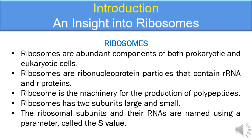Introduction and insight into ribosomes. Soon after transcription, as per the rules of central dogma, the mRNA comes to the cytoplasm from the nucleus for translation of polypeptides. The name which pops up here is ribosomes, as ribosomes are the main machinery for carrying out the entire protein translation process. Ribosomes are abundant components of both prokaryotic and eukaryotic cells. Ribosomes are also known as ribonucleoproteins, as they consist of a protein part and an RNA part. The protein part is known as ribosomal protein and the RNA part is known as rRNA or ribosomal RNA.